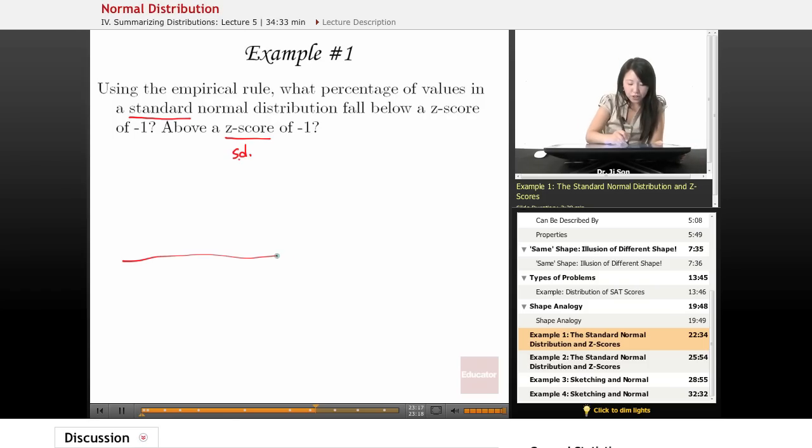All right. So we could easily do this problem just by knowing the empirical rule. And in a standard normal distribution, we pretend like we don't know the actual values.